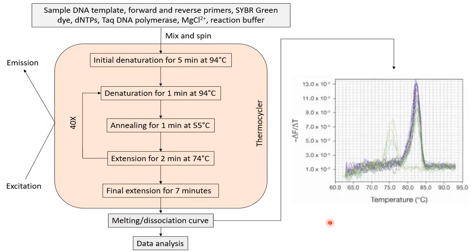There is one drawback of using SYBR Green dye: it can bind to any double-stranded DNA. So we cannot be sure whether the DNA amplifying in the PCR is our target DNA or a contaminating DNA. In other words, SYBR Green dye lacks specificity. Therefore, to check for any contaminating DNA that may have amplified, we have to run a melting curve of the amplified product.